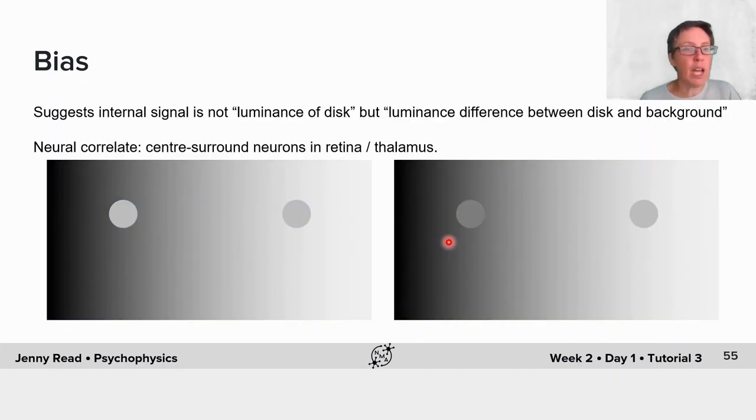We can draw inferences about the underlying neural representation. It suggests that the internal signal on which my perception is based isn't so much luminance of this little disc, but rather something like luminance difference between the disc and the background that it's on. The neural correlates may be centred around neurons in the retina or in the thalamus.